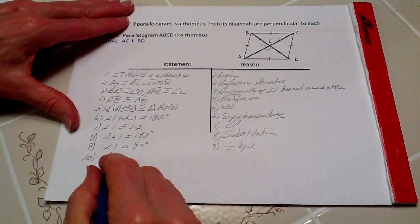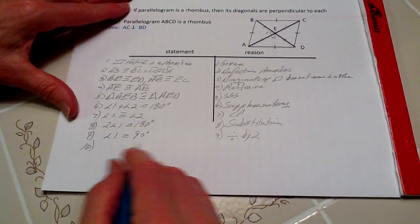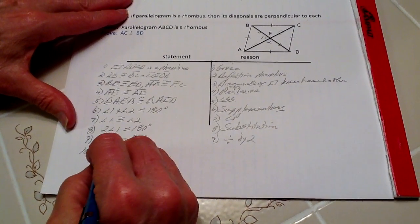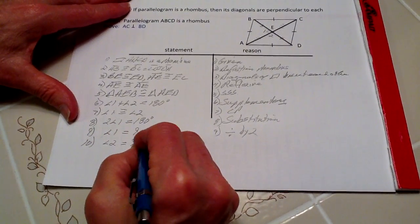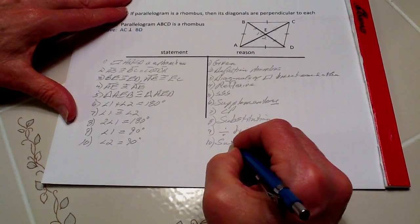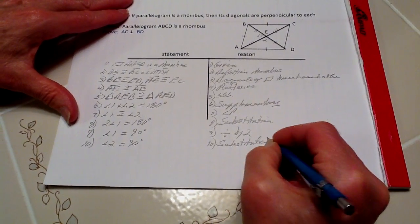Then number ten, likewise, if angle one equals 90 degrees, then angle two has to be as well, because by substitution or transitive, either one would do, but we'll use substitution.